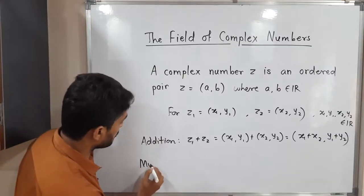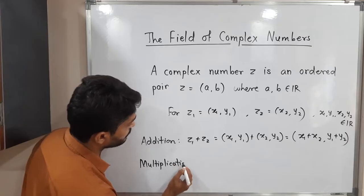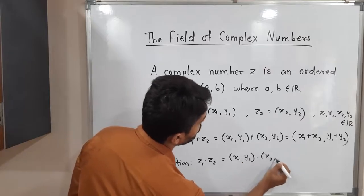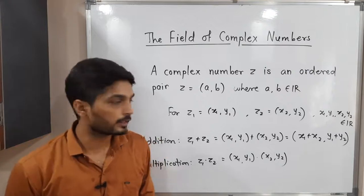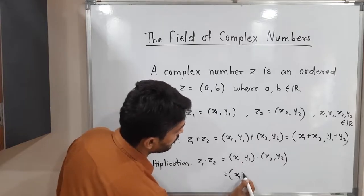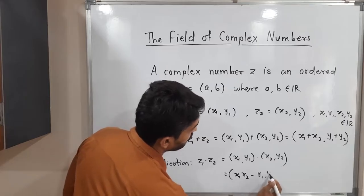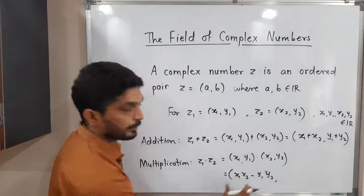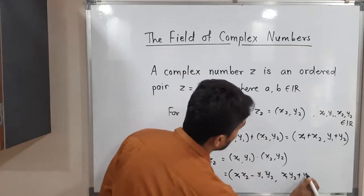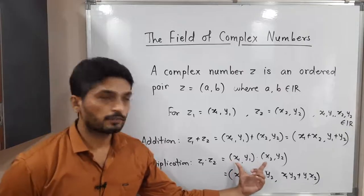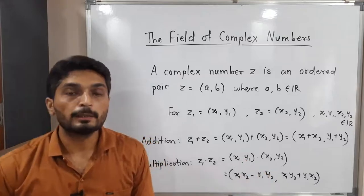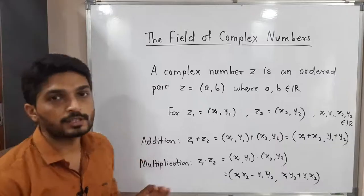Multiplication is defined differently. z1 times z2, which equals (x1, y1) times (x2, y2), is not simply component-wise. It is defined as: the first component is x1·x2 minus y1·y2, and the second component is x1·y2 plus y1·x2. In short: first times first minus second times second, comma, first times second plus second times first.